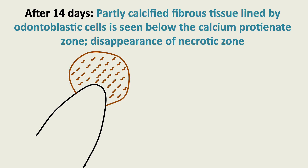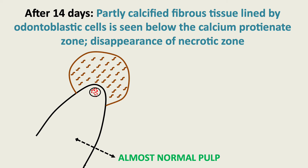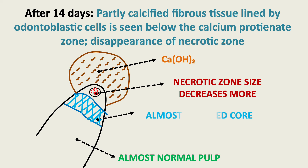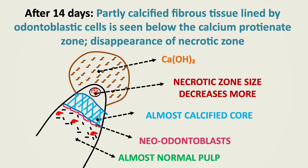After 14 days of application of calcium hydroxide, partly calcified fibrous tissue lined by odontoblastic cells is seen below the calcium proteinate zone. There is disappearance of the necrotic zone. As you can see in the figure, we have almost normal pulp with further decrease in the size of the necrotic zone and an almost calcified basophilic layer, with new odontoblast formation.